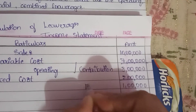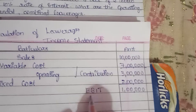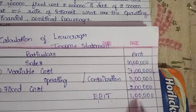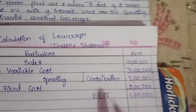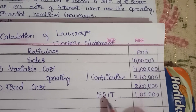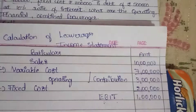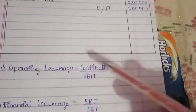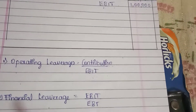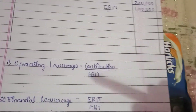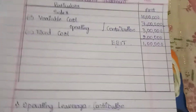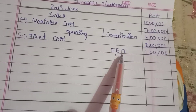EBIT — Earnings Before Interest and Tax — is 1 lakh. Operating Leverage equals Contribution divided by EBIT. Financial Leverage equals EBIT divided by EBT. We need to find EBT according to format.